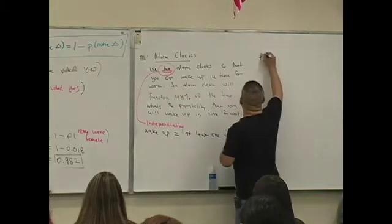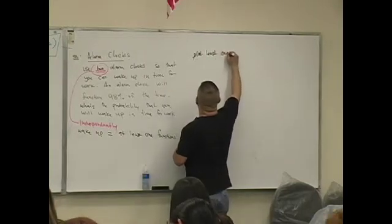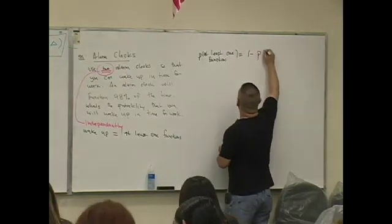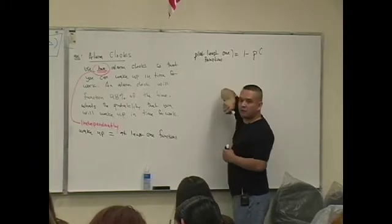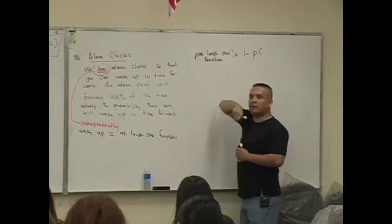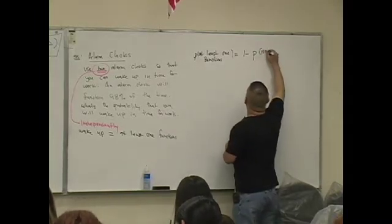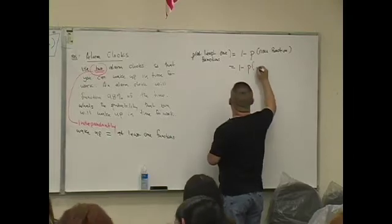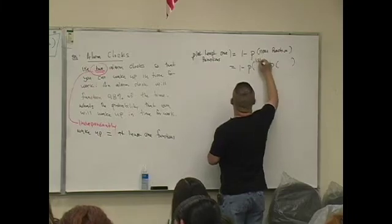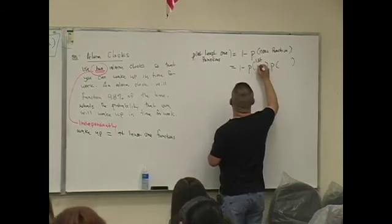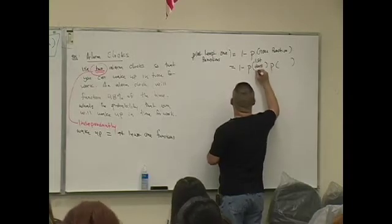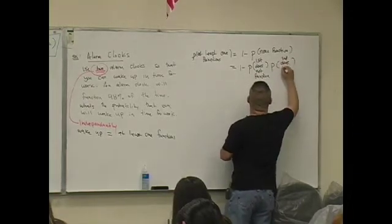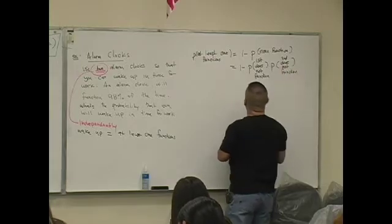This is an at least one question. So the probability that at least one clock functions, what do you guys know about that? Isn't that one minus the probability that none function? One minus the probability that none functions. So how many alarm clocks am I using? Two. For none to function, that means the first doesn't function and the second does not function. They both do not function.